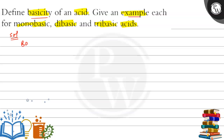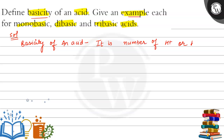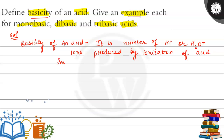So first we have to define basicity of an acid. Basicity is basically the number of H⁺ or H₃O⁺ ions produced by the ionization of an acid in aqueous solution.